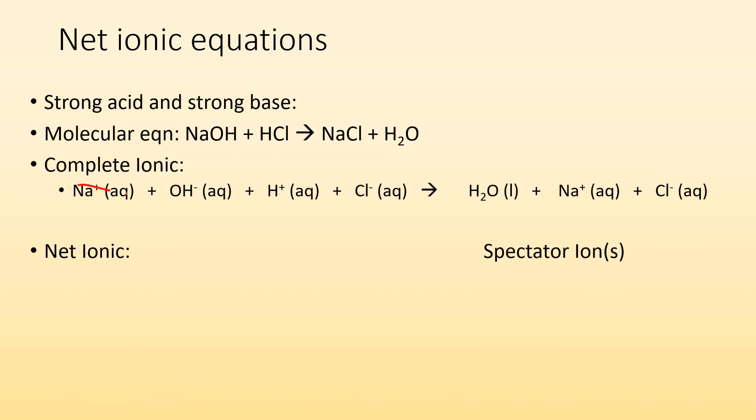So my net ionic, let's see, I got Na+ on this side and that side. I got Cl- on both sides. The way I'm going to write it is going to be H+ aqueous plus OH- aqueous gives me an H2O in the liquid state. Spectator ions would be that sodium ion as well as that chloride ion.